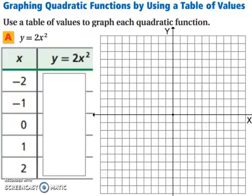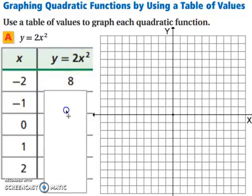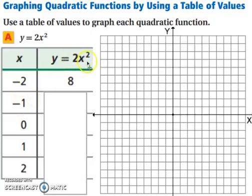Graphing quadratic functions by using a table of values. When you're using a table of values, you simply plug these x values in and then simplify. Substitute negative 2 in for x: we have 2 times negative 2 squared, and that gives us 8. Then do the same with negative 1: 2 times the quantity negative 1 squared gives you 2.